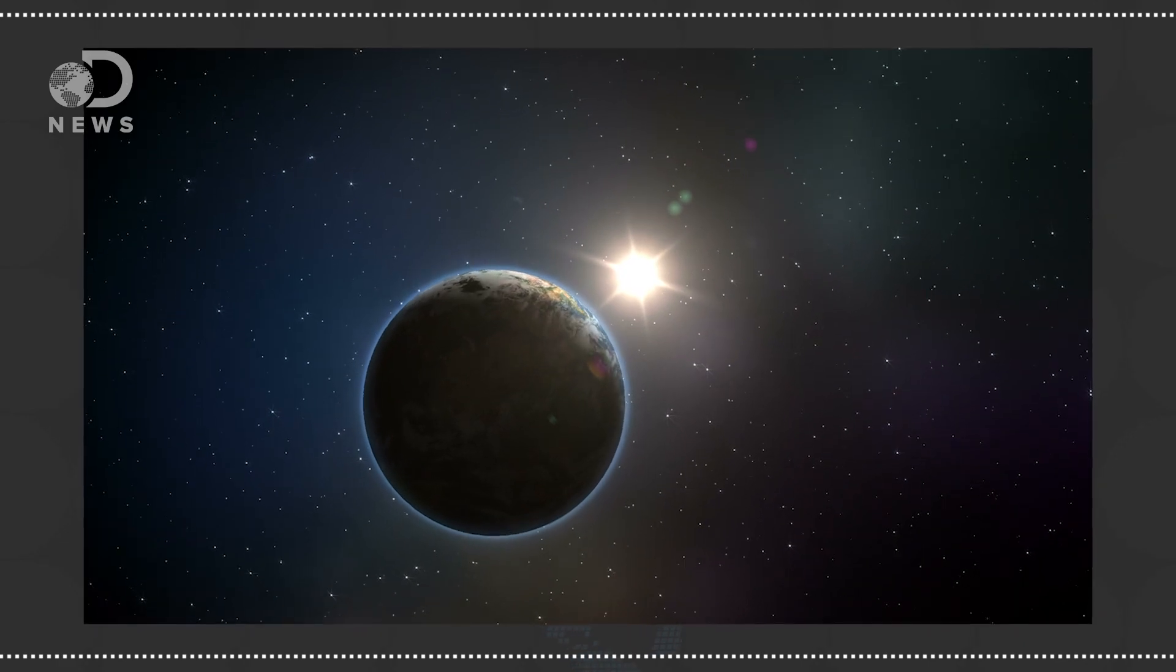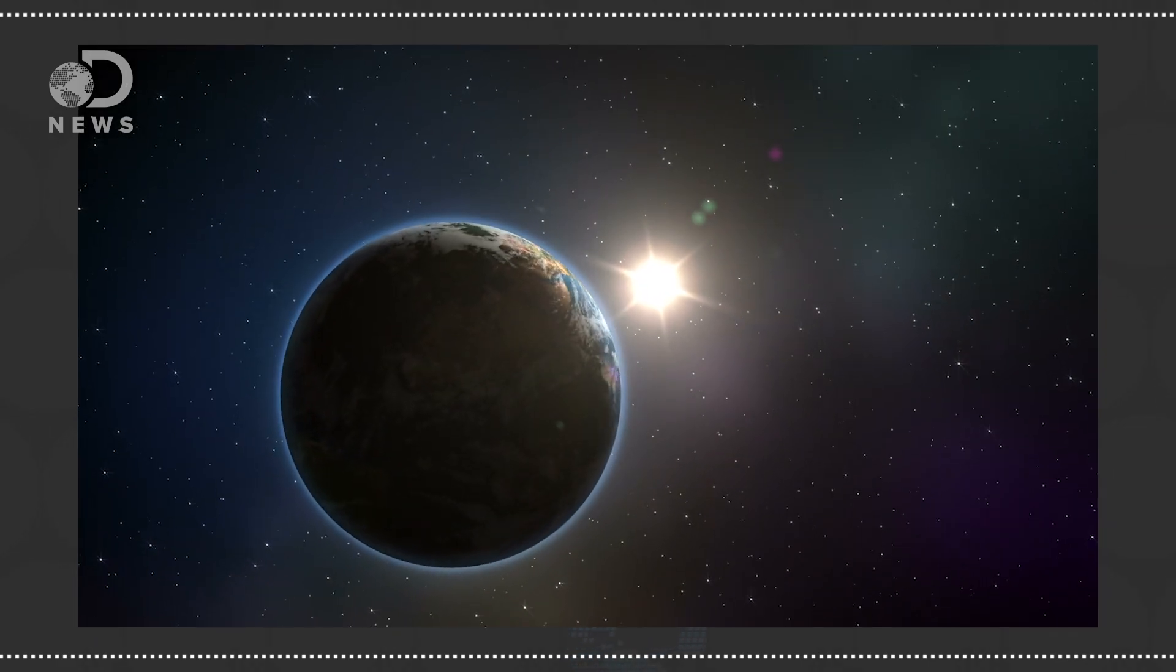And it's possible that, on Earth, green rust exposed to early atmosphere would have done the same thing, helping our planet generate the oxygen-rich environment that has harbored life like us.